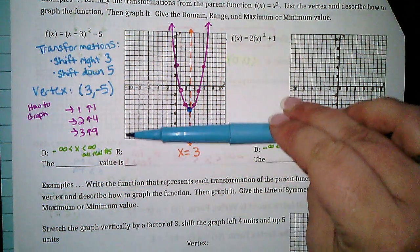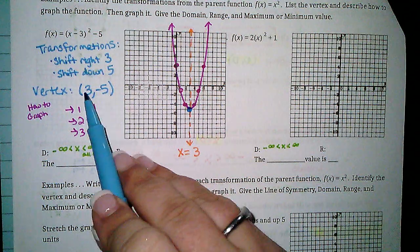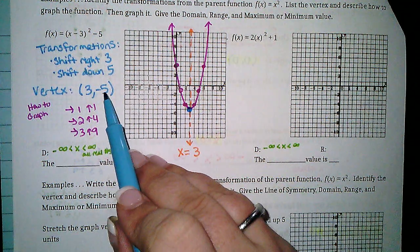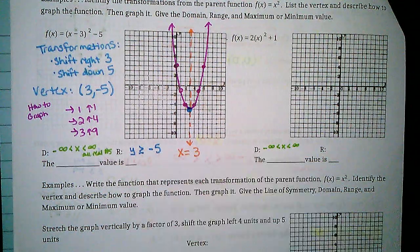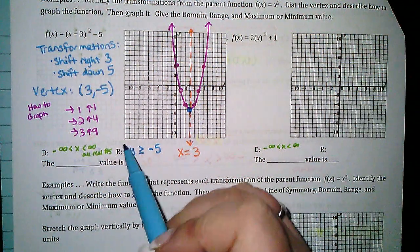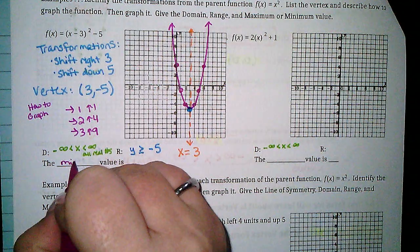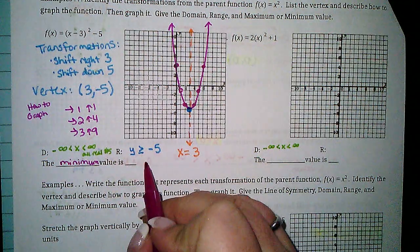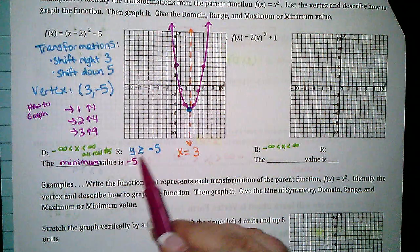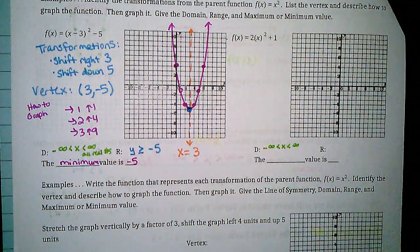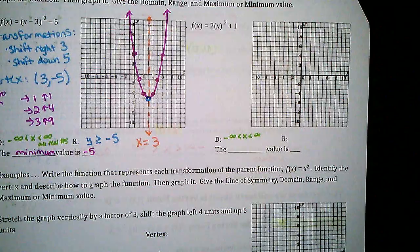Range is a little different. Put your pen flat, move it up — the first thing you encounter is the vertex. Since range is y values, use the y value. It doesn't have a reflection, so it's going to be all numbers greater than that — y is greater than or equal to negative 5. Since it opens up, it has a minimum, and that minimum value is the y value of the vertex, which is negative 5. Notice the y value of the vertex, the minimum, and the range all have something to do with each other.